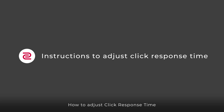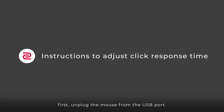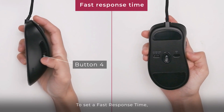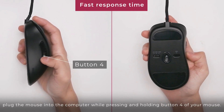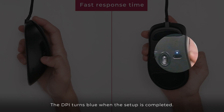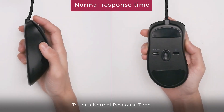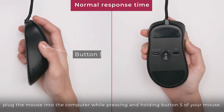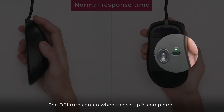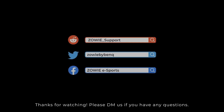How to adjust click response time? To adjust the click response time of your mouse, first unplug the mouse from the USB port. To set a fast response time, plug the mouse into the computer while pressing and holding button 4. The DPI turns green when the setup is completed. To set a normal response time, plug the mouse into the computer while pressing and holding button 5. The DPI turns green when the setup is completed.